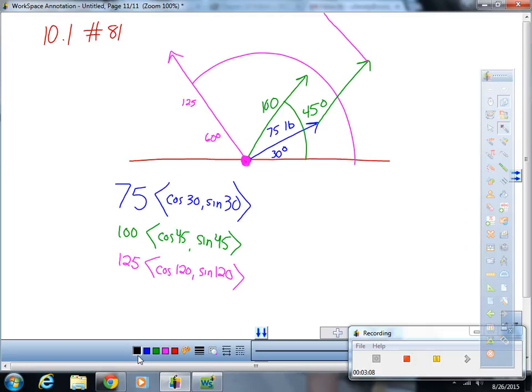You can imagine where it would end up. Our resultant vector would look something like that. That's what we're doing. We are adding the blue vector, the green vector, and the pink vector. Our resultant vector is going to be this black vector. It's going to have a direction and a magnitude. This is going to be where the weight is being pulled when we add the force upon these three.